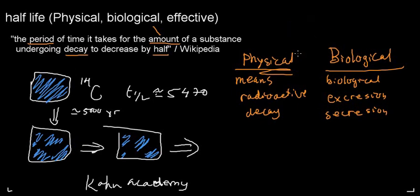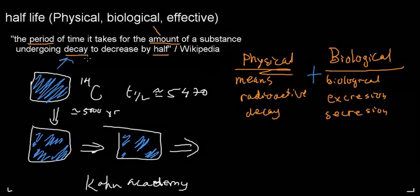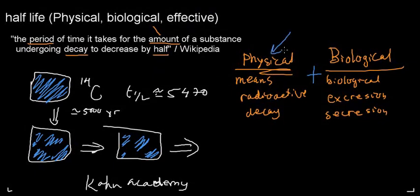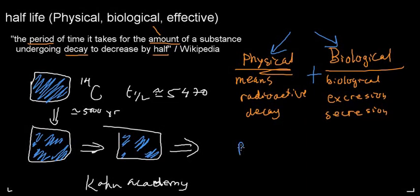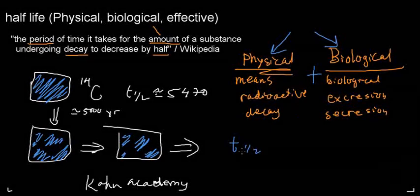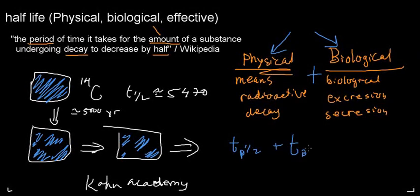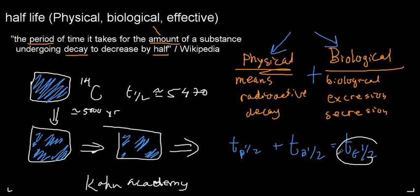If I take an isotope that undergoes radioactive decay and place it in a biological system, then we get the concept of effective half-life. Effective half-life is the period of time it takes for the amount of a substance to decrease by half by means of either physical or biological processes. The effective half-life incorporates both the physical and biological half-lives, and because of this combination, the effective half-life is always shorter than either of its components.